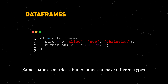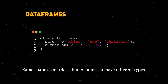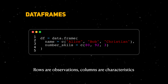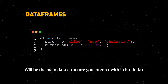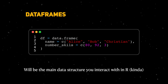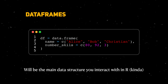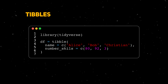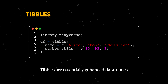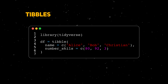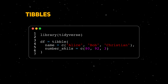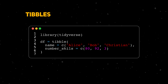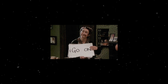Data frames are what you probably think of when you imagine a data set. Data frames have the same shape as a matrix, but each column can represent a different data type. Each row in a data frame represents an observation, while each column represents a characteristic. For the most part, this would be the main data structure that you interact with in R. In the tidyverse paradigm we work with tibbles instead of data frames — they're essentially the same thing but tibbles have some extra functionality.